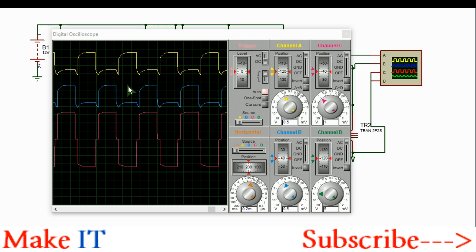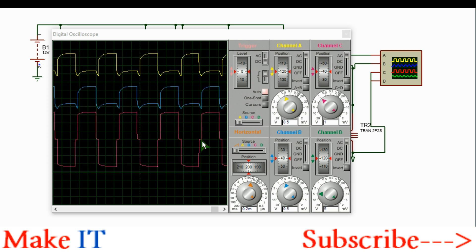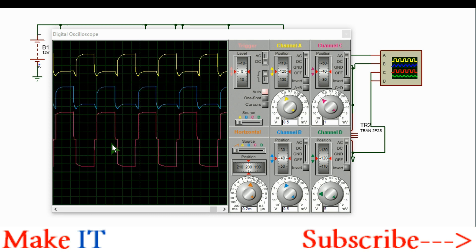This is the oscilloscope shot. Channel A is primary first input, channel B is the primary secondary circuit inputs, and channel C, the red one, is the output of the secondary.